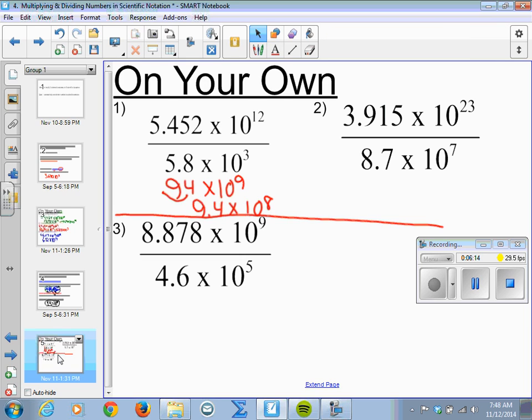Okay, same process for the next one. We're going to do 3.915 divided by 8.7. So this part leaves me at 0.45, and subtract the exponents, we have 10 to the 16th power.